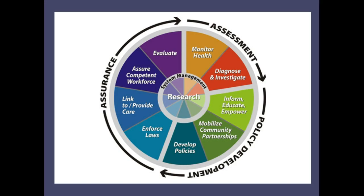Assurance includes governmental public health oversight responsibility for ensuring key components of an effective health system, including health care and public health, are in place, even though the implementation will often be performed by others. In the center of the framework, you'll notice research. Policy development includes developing evidence-based recommendations and other analysis of options, such as health policy analysis, to guide implementation.